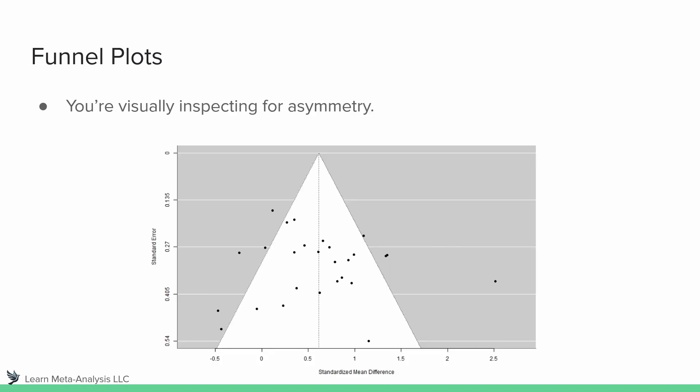The first one is a funnel plot, and it's called that because it looks like a funnel. On one side we have standard error, and on the other we have standardized mean difference, which was the effect size used in the meta-analysis. The black dots indicate individual effect sizes. What we're doing when examining funnel plots is visually inspecting for asymmetry — and if that sounds kind of vague, it's because it is. What would constitute asymmetry, or even significant asymmetry, can be challenging to identify through visual inspection.